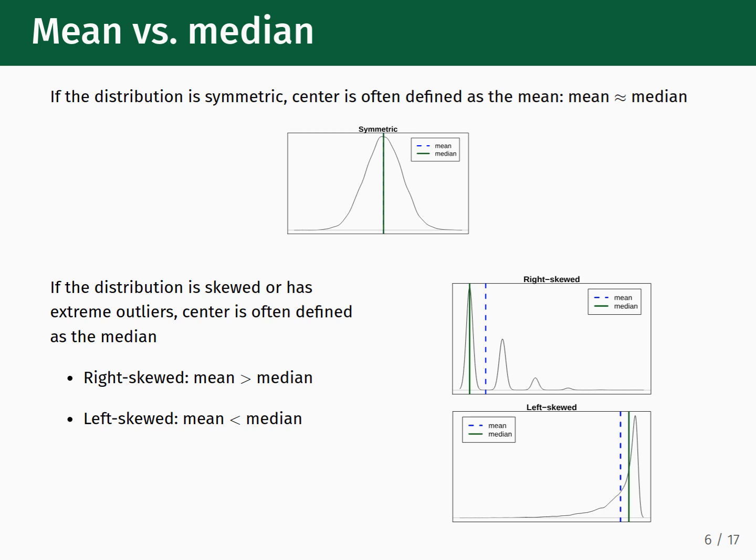To better understand mean and median as different types of measures for the center of a data distribution, let's consider the following examples. If you have a symmetric data distribution, the mean will usually be used as the numeric value for the center. However, as shown in this plot at the top of the slide, the mean and the median will be approximately equal to each other in a symmetric data distribution. Conversely, if the data distribution is skewed or has extreme outliers, then the median is often used to quantify the center. Consider the two example plots on the right, which compare the mean, shown as a dashed line, and the median, shown as a solid line. In a right-skewed distribution, which is the top plot on the right, the mean will be greater than the median. In a left-skewed distribution, shown in the bottom plot on the right, the mean will be less than the median.